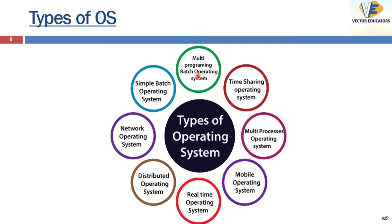In the multi-programming batch system, the operating system picks up and begins to execute one job at a time from memory. When a job needs an input/output operation, the operating system switches to another job — so in this system the CPU is always busy. Then coming to time sharing operating system: it enables many users located at various terminals to use a computer system at the same time. It can also be called multitasking. The time sharing OS is a logical extension of the multiprogramming system.